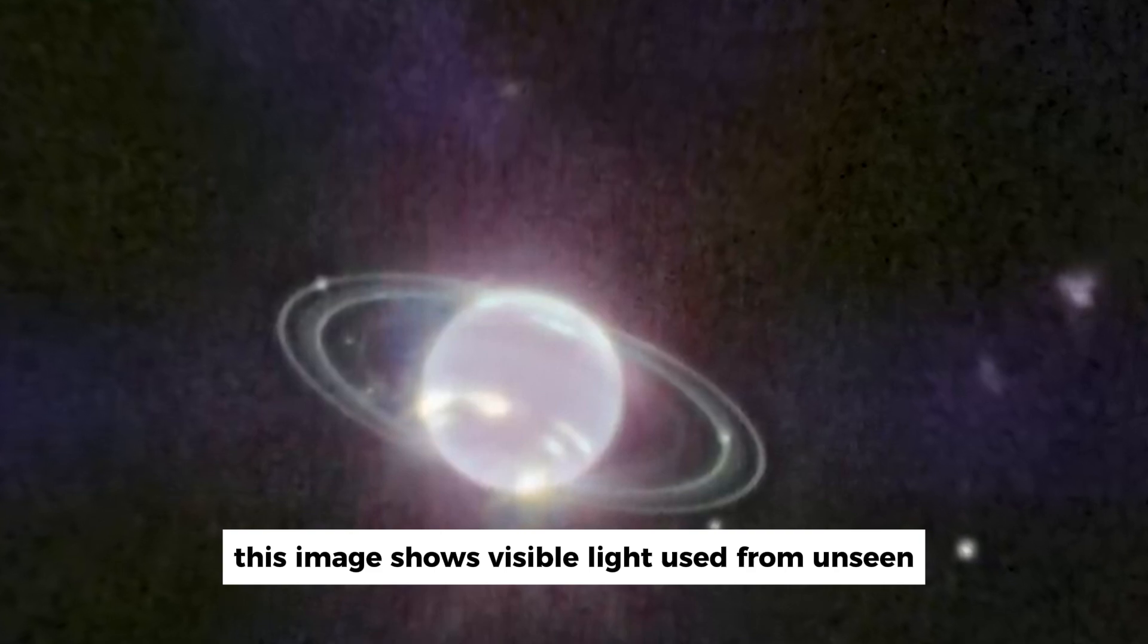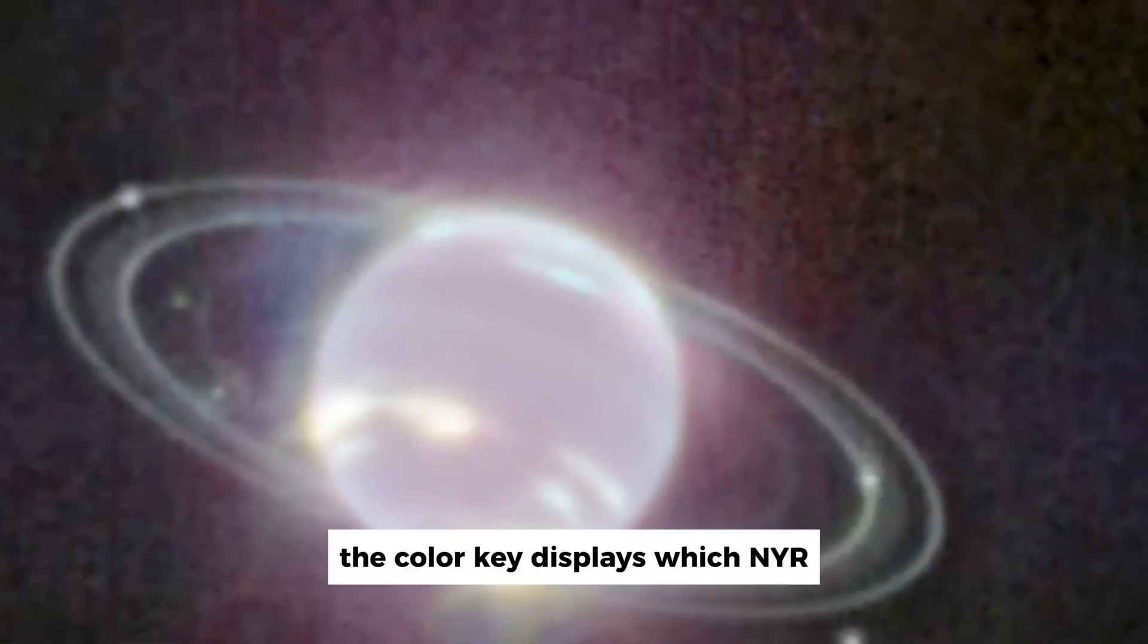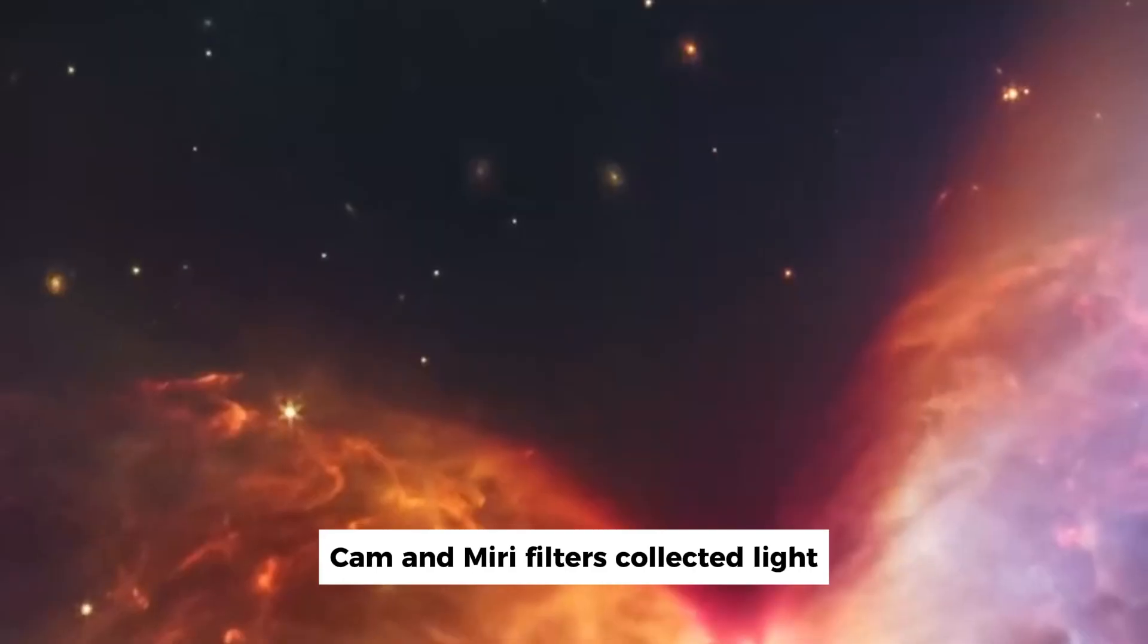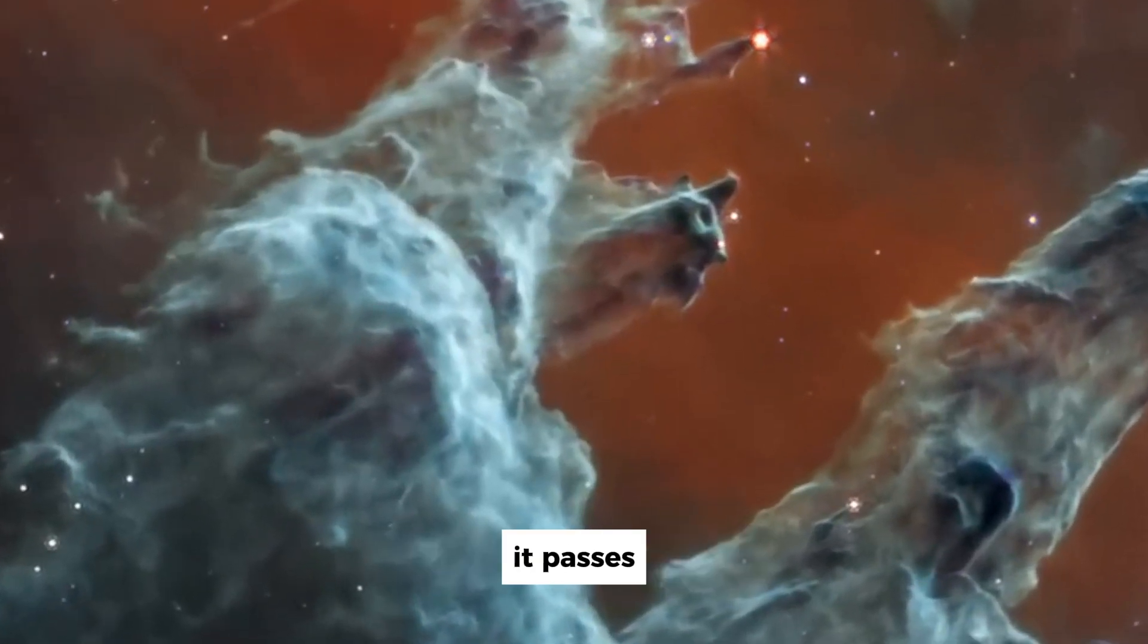This image shows visible light used from unseen near-mid infrared wavelengths. The color key displays which NIRCAM and MIRI filters collected light. Each filter name represents the visible light color of the infrared light it passes.